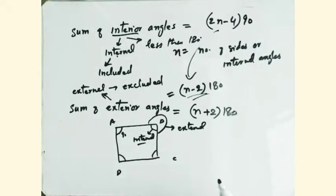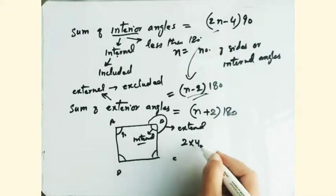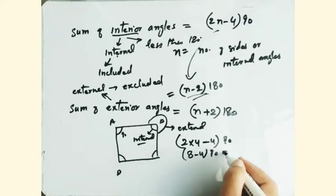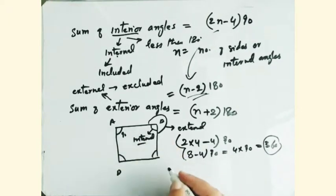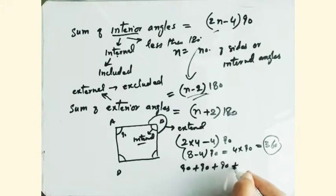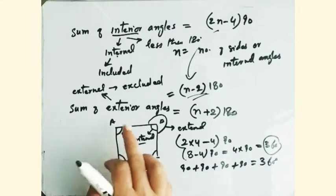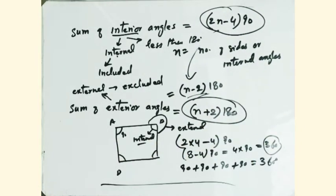Let's elaborate with an example. This is a quadrilateral, a closed traverse A, B, C, D. Putting in the values: (2 × 4 − 4) × 90° = (8 − 4) × 90° = 4 × 90° = 360°. For verification: 90 + 90 + 90 + 90 = 360°. This is how you find the summation of internal angles of any traverse using these formulas. Thanks for watching.